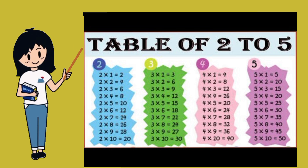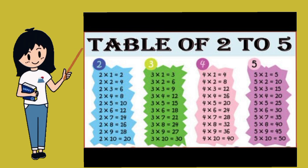Five ones are five. Five twos are ten. Five threes are fifteen. Five fours are twenty. Five fives are twenty-five. Five sixes are thirty. Five sevens are thirty-five. Five eights are forty. Five nines are forty-five. Five tens are fifty.